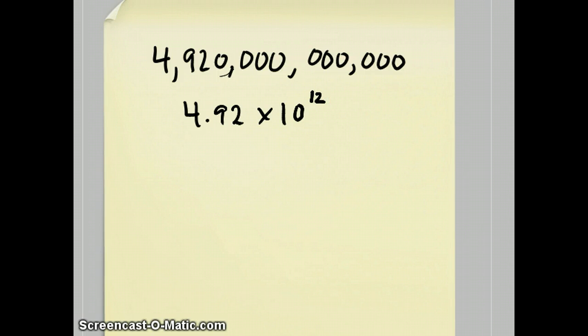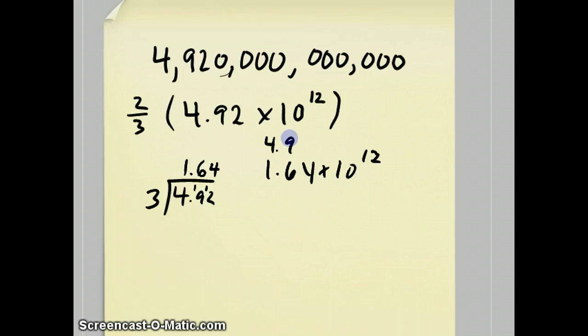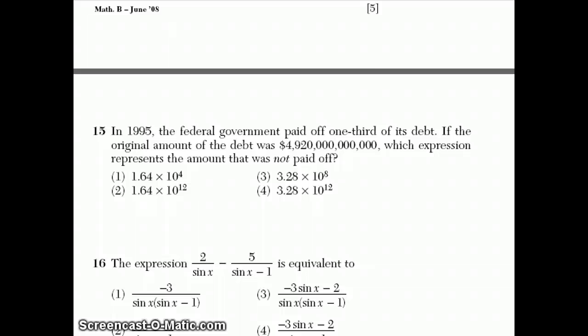They want to know what's basically two-thirds of this number because that would be how much is left. Or you could figure out one-third and then subtract. I think I'll do it that way. 4.92, you could use a calculator, but I'll do it old school, 6, 4. So, 1.64 times 10 to the 12th is how much they've paid off. If you subtract 1.64 from 4.92 times 10 to the 12th, you will get 8, 2, 3, 3.28 times 10 to the 12th, which happens to be choice number 4.